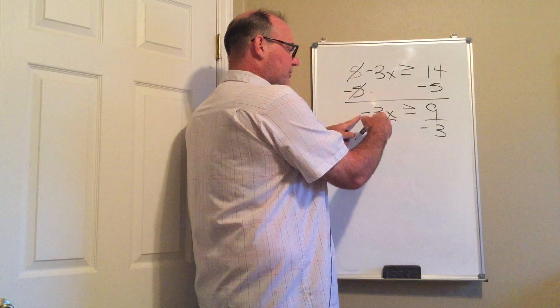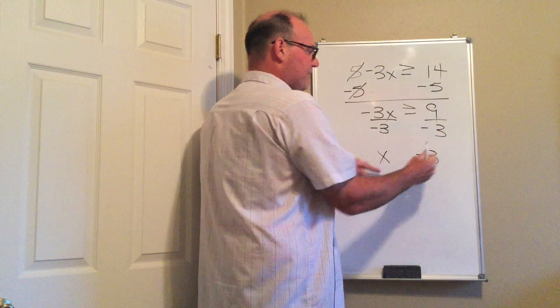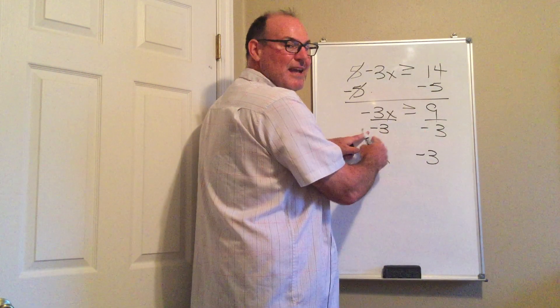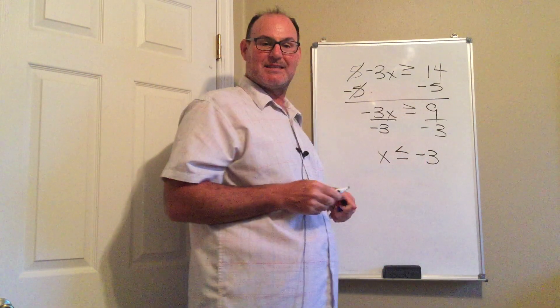So my negative 3 divided by negative 3 is x. 9 divided by negative 3 is negative 3. And now since I have divided by a negative, I take this inequality and flip it and make it a less than or equal to.